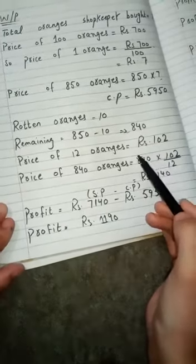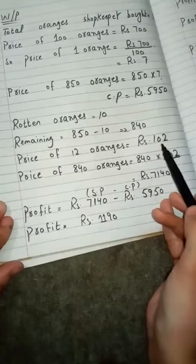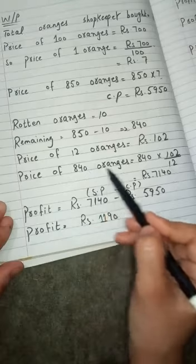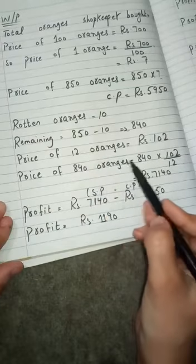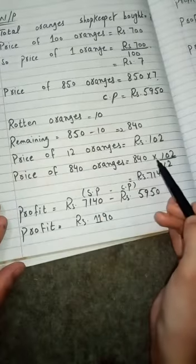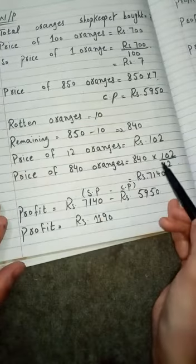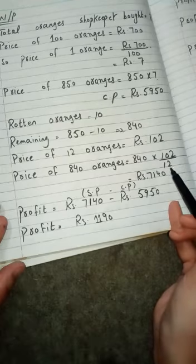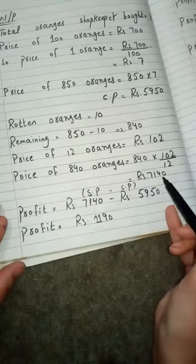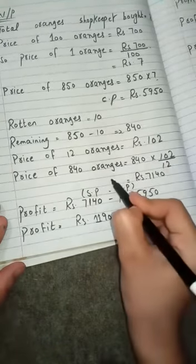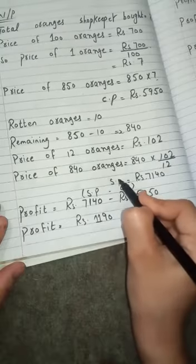If 12 oranges are in Rs. 102, then price of 840 oranges, what will it be? Simple is that 840 multiply 102 and divide it by 12. So the answer is 7140. This is going to be called selling price.